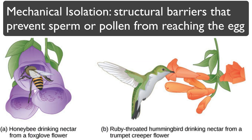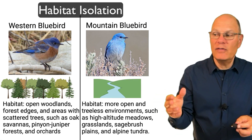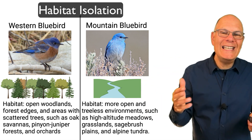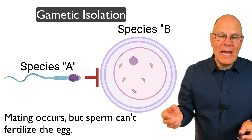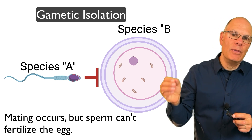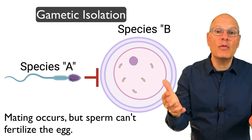Mechanical barriers are structural barriers that prevent sperm or pollen from reaching an egg. If the flower structure is very different, then a pollinator wouldn't be able to bring pollen from one flower to another. Habitat isolation occurs when one species lives in the forest and another in the meadow, or one in the uplands and another in the lowlands — they won't meet in order to breed. Finally, gametic isolation occurs when the egg won't allow fertilization because there's some molecular mismatch that prevents the sperm from binding with the egg.